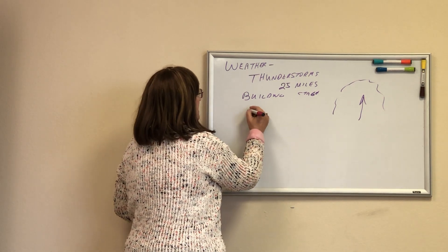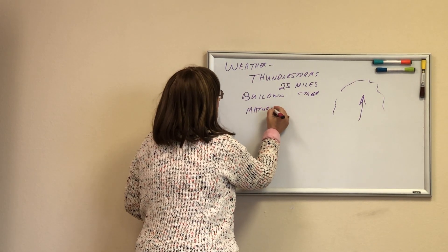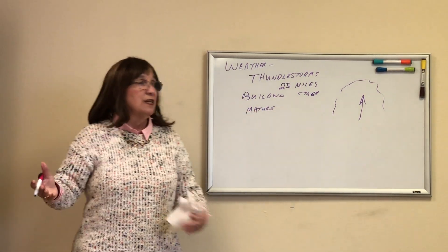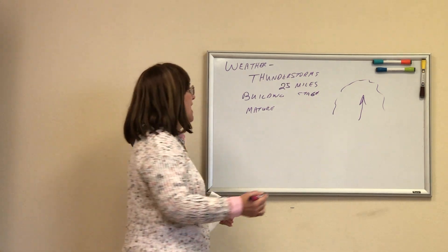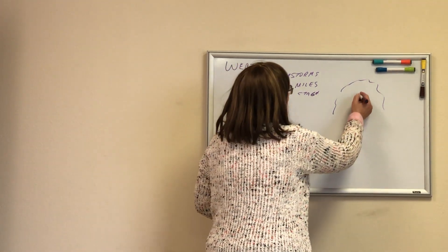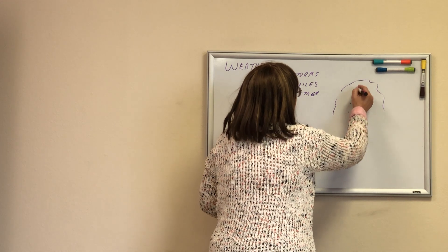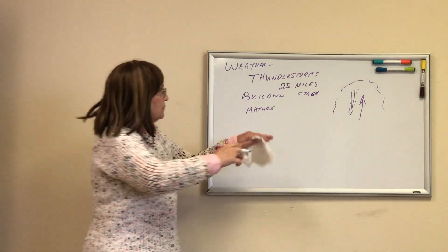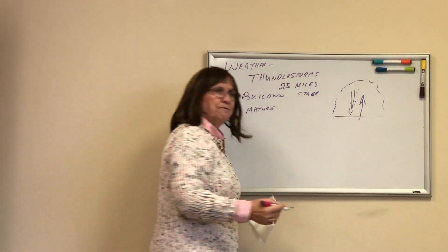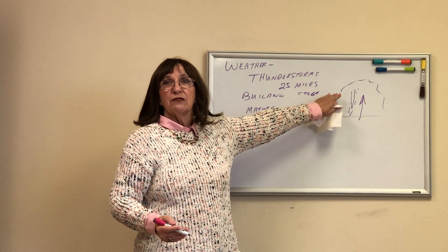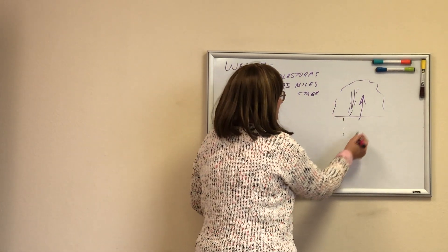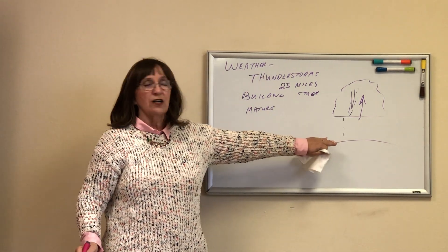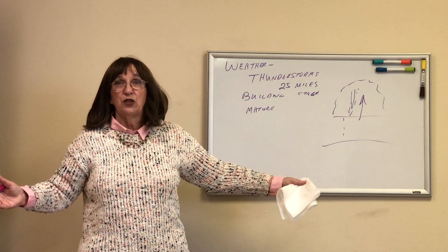The next stage is going to be the mature stage. What does that mean? When the first precipitation hits the ground. What's going to happen is the droplets go up, get heavy and fall — up and down, up and down. At some point the droplets get too heavy, they come out of the cloud and hit the surface. When the first precipitation hits the surface, that's when the storm has gone mature.